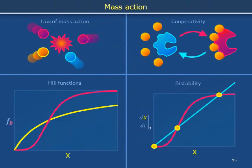We just used the law of mass action to show that cooperative binding can be described using Hill functions. In the next video, we show that Hill functions provide an opportunity for bistability.